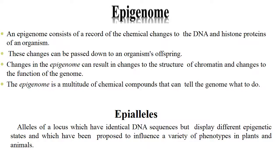The epigenome consists of a record of the chemical changes to the DNA and histone proteins of an organism. These changes can be passed down to the organism's offspring — that means it is heritable. Changes in the epigenome can result in changes in the structure of chromatin and changes in the function of a genome. The epigenome is a multitude of chemical compounds that can tell the genome what to do.